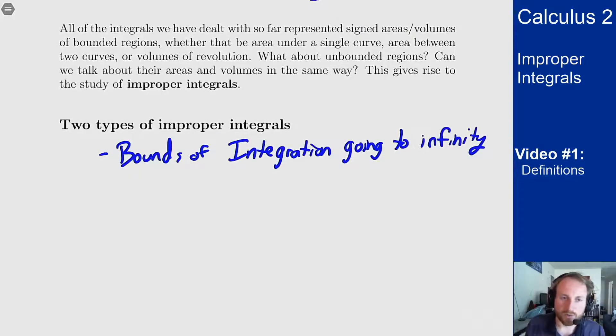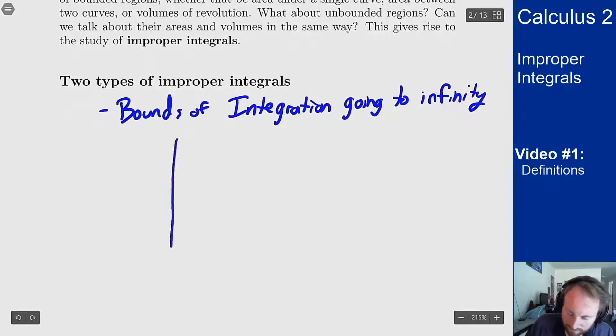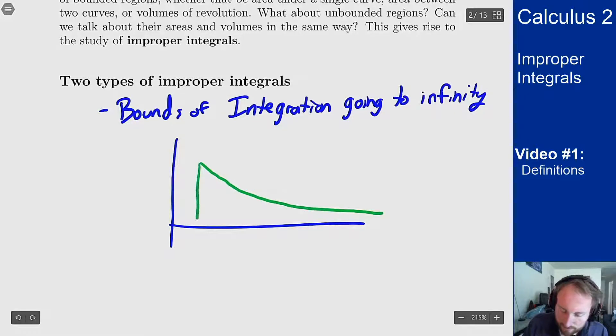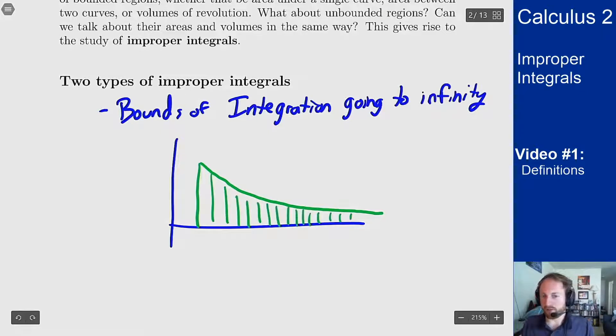For the first of these we're talking about a region that looks something like this. If I have my axes like this I can take a curve that looks like this and I could want to find the area of this region here that goes all the way out to infinity. Will it exist? I don't know, but that's what we're trying to figure out using this sort of problem.